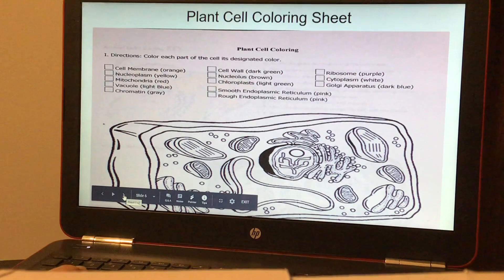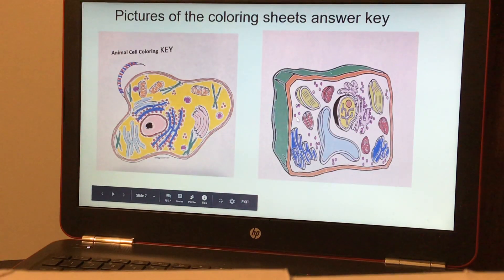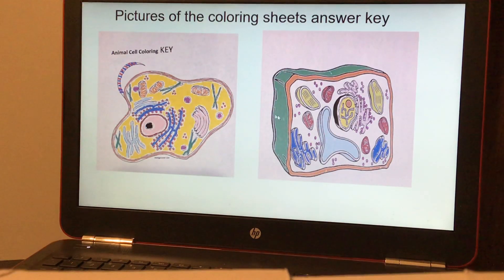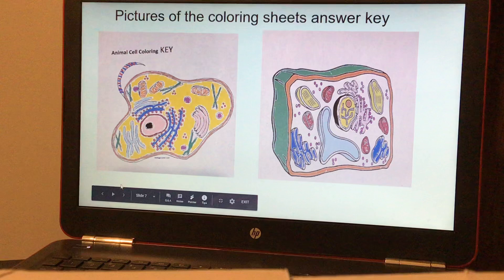Here's a copy of the answer key for how the cells should have been colored, but you can go back and forth to practice, so that you know the parts of the cells.